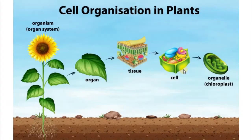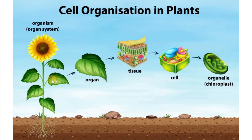And with plants we can do the same. We begin with the cell. Many cells together make a tissue. Many tissues together make an organ — in this case a leaf, and a leaf is an organ. Several organs together make a system: the stem, the leaves, and the roots. And all the systems together make the organism, in this case a sunflower.